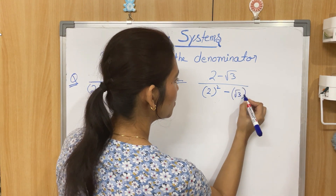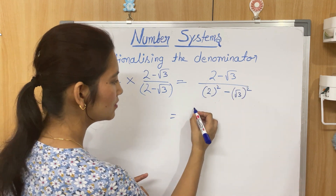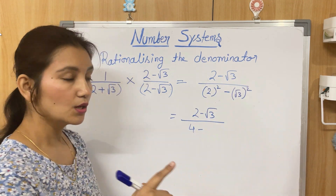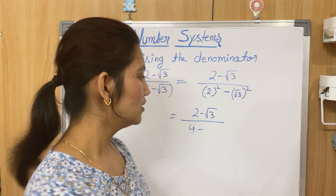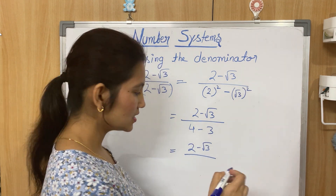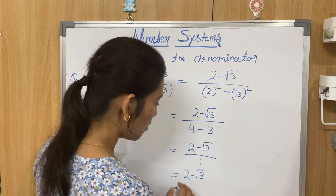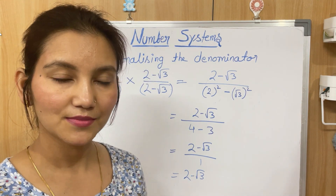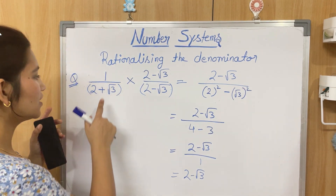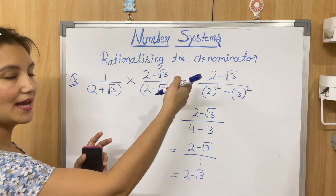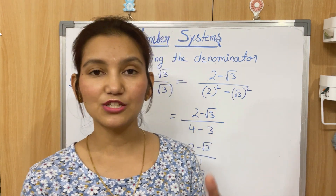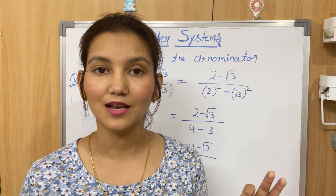So we get 2 − √3 in the numerator, and in the denominator 2² = 4 and (√3)² = 3, giving 4 − 3 = 1. So the answer is 2 − √3, and the denominator is rationalized. Whatever is in the denominator, you just change the sign of the operation — if it's plus, make it minus — then multiply the numerator and denominator by that. This trick works for any question on rationalizing the denominator.